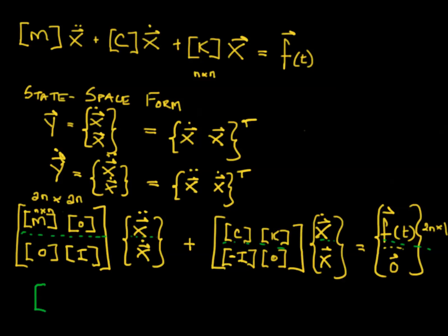But by putting it in this form, it's very easy to rewrite this now as A times y dot plus B times y equals, and I'm going to call this capital F, this vector now, F of t. And these are 2n equations.